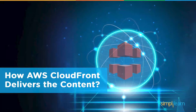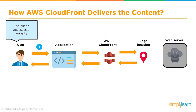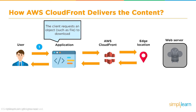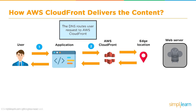Now let's look at how AWS CloudFront delivers content — the architecture flow. The client first accesses a website by typing a URL in the browser. The client then requests an object to download, such as a particular file. At that point, DNS routes the user's request to download that file to AWS CloudFront.